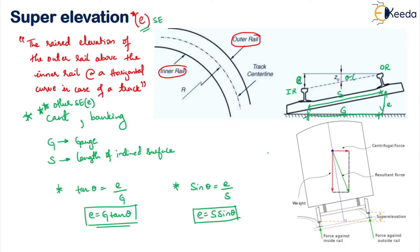Why do we introduce super elevation? This is all about the definition and the way to calculate super elevation. It is important for us to know why we introduce super elevation in our structure. We normally provide it on curved tracks. We do this to introduce centripetal force to counteract the tendency of the centrifugal force, which is acting horizontally through the center of gravity. Because the vehicle is moving on a curved surface, a centrifugal force is developed.